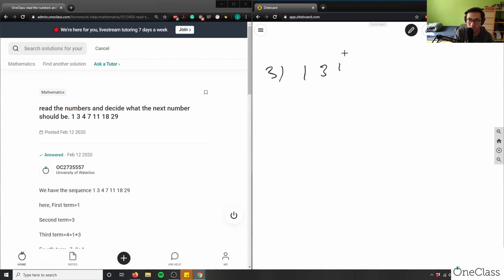You have 1, 3, 4, 7, 11, 18, and 29. So it says decide what number comes next.